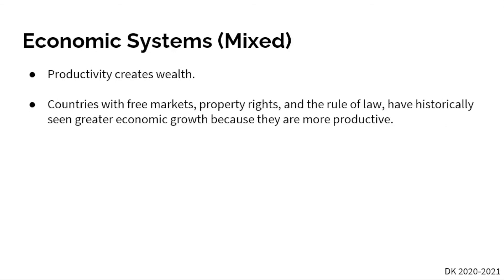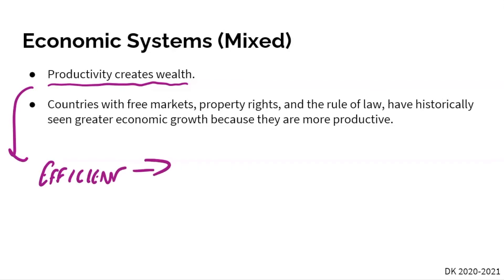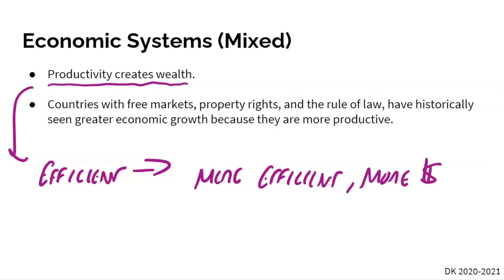The last thing we're going to talk about is productivity. Productivity creates wealth — we can also say productivity means being efficient. The more efficient you are, the more money that company or country is going to make. Looking at the three economic systems, countries with free markets or mixed markets that have property rights and the rule of law historically have greater economic growth. Why? Because they're more efficient and more productive than countries with a command economy or communism.